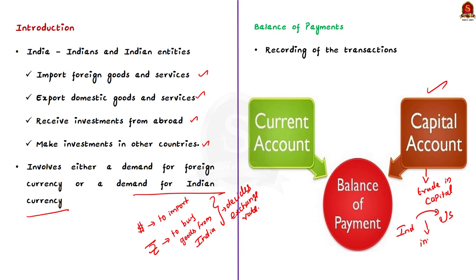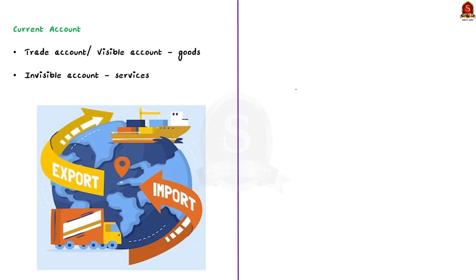The second part of the BOP is the current account. All trade in goods and services is noted here — for example, if an Indian imports an American gadget or software, or if an American entity imports Indian steel or engages an Indian IT company. The current account has two specific sub-parts: the first is the import and export of goods, called the trade account; the second is the import and export of services, called the invisibles account.